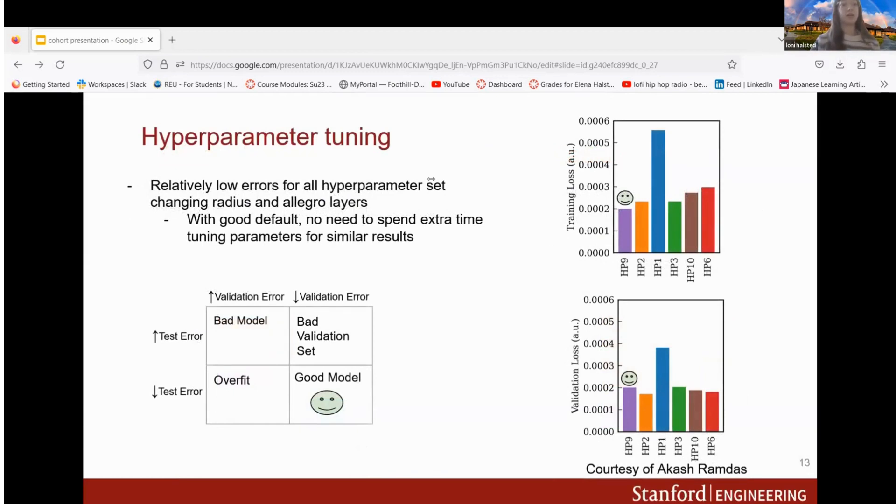When we compare all the hyperparameter sets we found that there were low errors for both the training and validation sets. Training and validation is where we split our dataset into what we train it on and then what we validate it on. We found that with a good default there is no need to spend extra time tuning for a similar result.